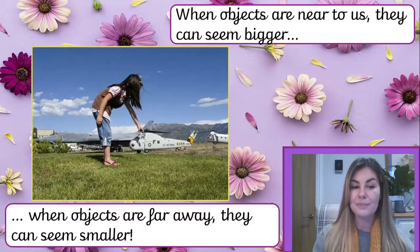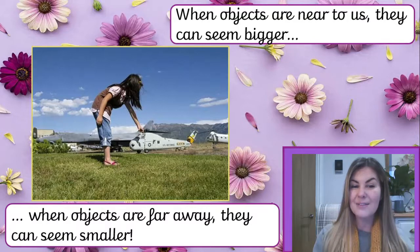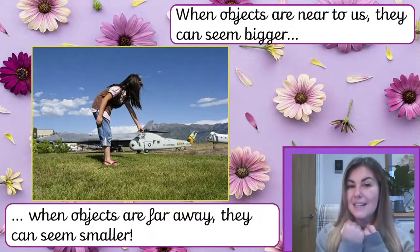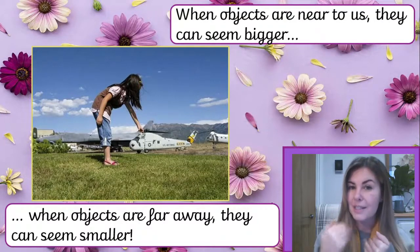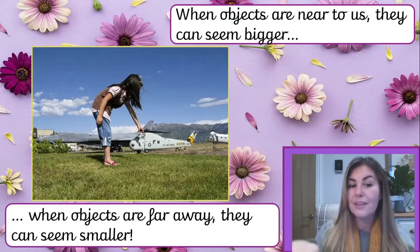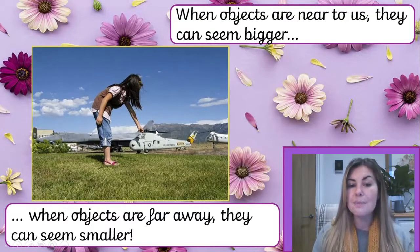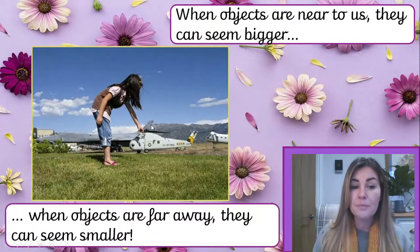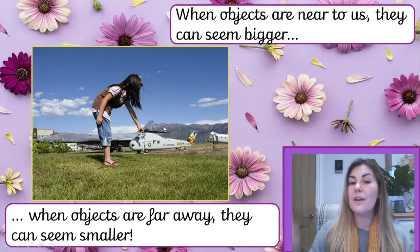Second picture: there's a girl picking up a helicopter. Is that really a girl picking up a helicopter? No. Who is standing nearer to the camera? The girl. Who's standing far away? The helicopter. If you look in the background, you can see some mountains, and mountains would be far bigger than the helicopter and the girl. But they actually look quite small in that picture because they are the furthest away.